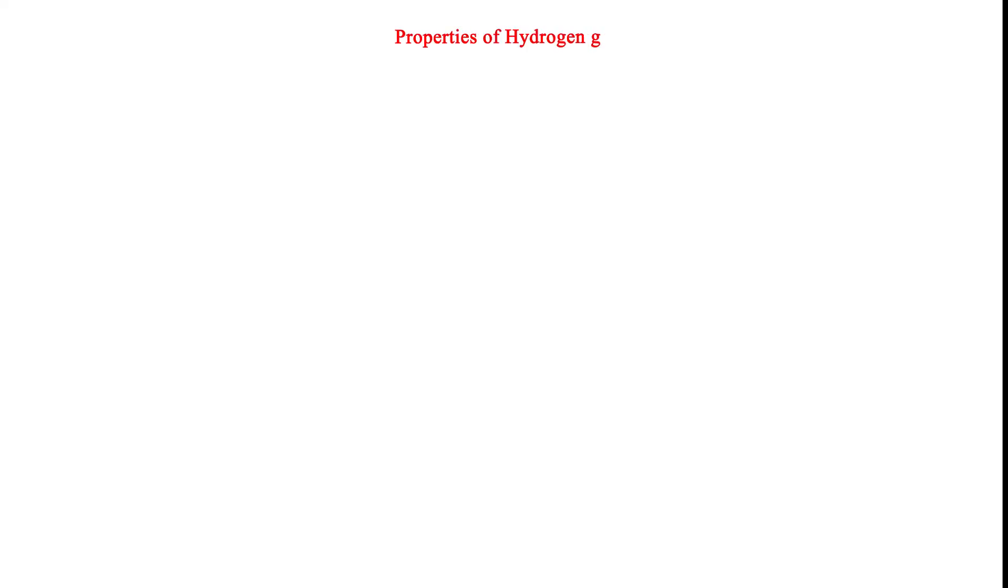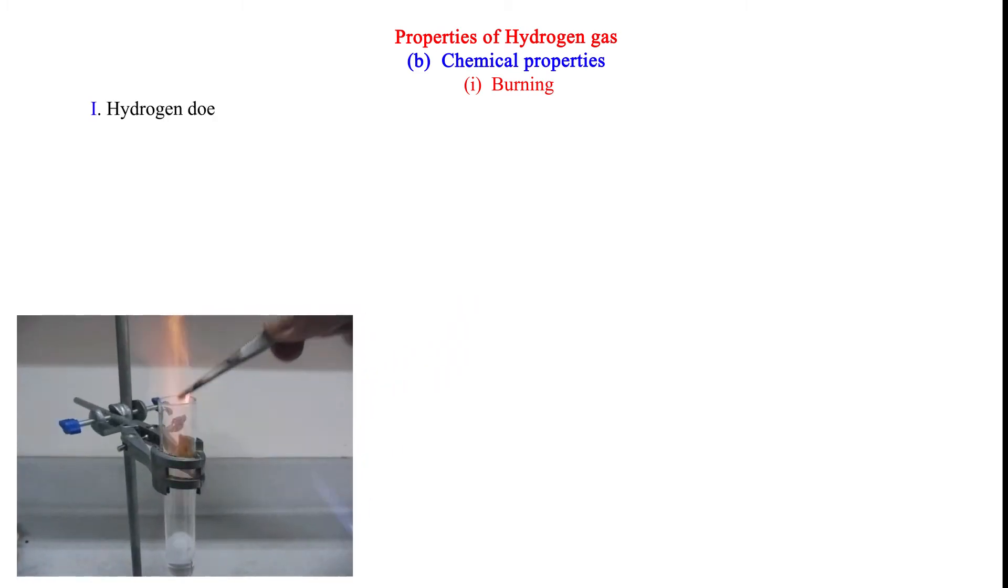Properties of Hydrogen Gas B. Chemical Properties. 1. Burning. Hydrogen does not support burning or combustion. When a burning splint is inserted into a gas jar containing hydrogen, the flame is extinguished or put off.